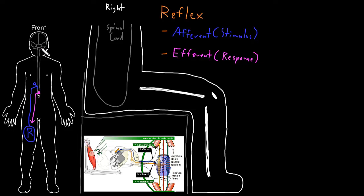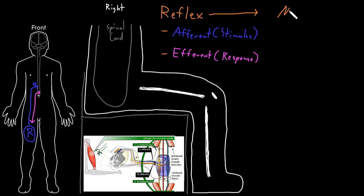Other reflexes, particularly those up in the brainstem, have an afferent limb that comes in on one side, and then efferent responses that come out to both sides. So there's some variety in how information travels in reflexes, depending on the reflex. One of the simplest reflexes that's a good example, and that happens to be one of the most medically useful, is called the muscle stretch reflex.